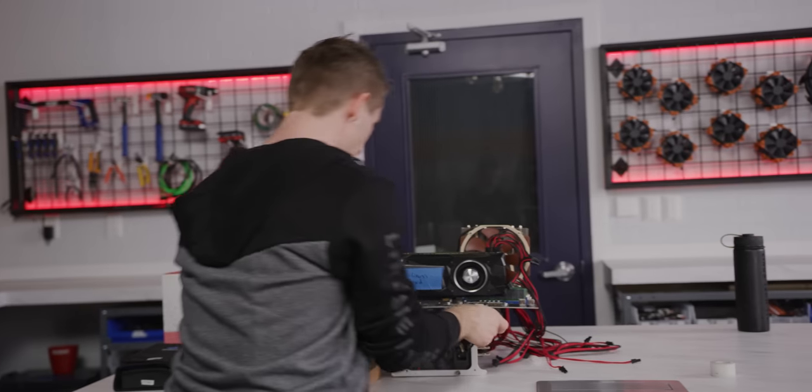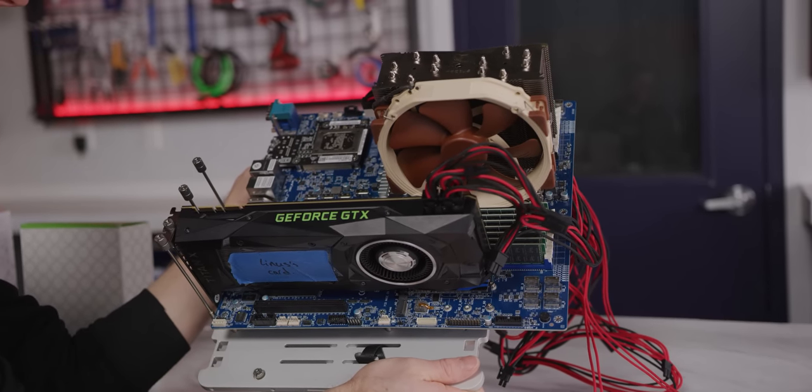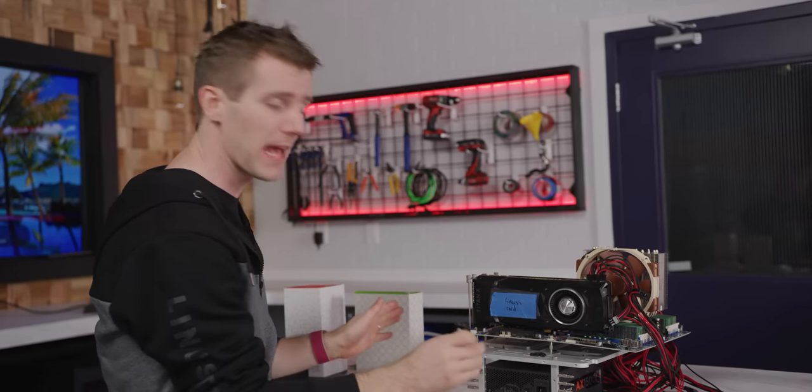Now, this is a little bit on the overkill side. We've got an EPIC 7742 64 core processor, two terabytes of RAM, a GTX Titan X, all that good stuff. We don't really need any of that.